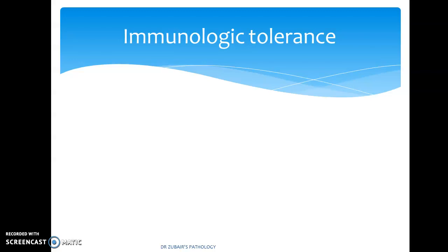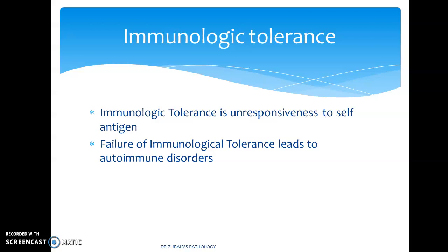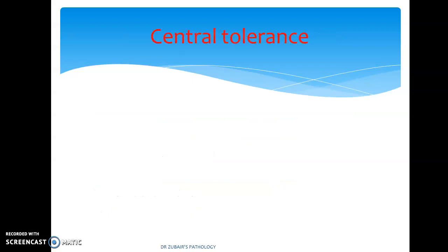What is immunological tolerance? Immunological tolerance is unresponsiveness to self-antigen. Failure of immunological tolerance leads to autoimmune disorders. Immunological tolerance is of two types: central tolerance and peripheral tolerance. Basically, it is our own body cells not acting against our own antigens — that is called immunological tolerance.